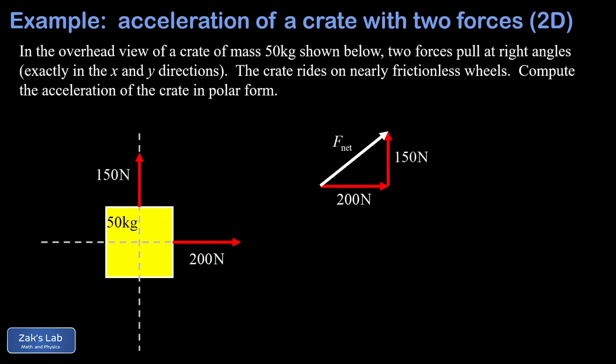And that vector sum, that's the net force on the crate, so we label the magnitude of that as F net. Now, because these forces point exactly in the x and y direction from the beginning of the problem, we already have a right triangle.